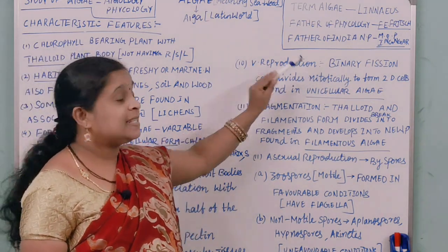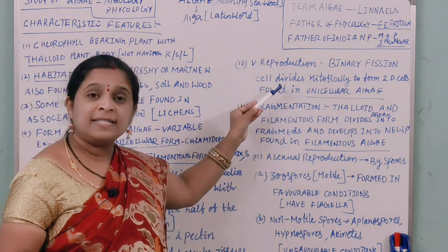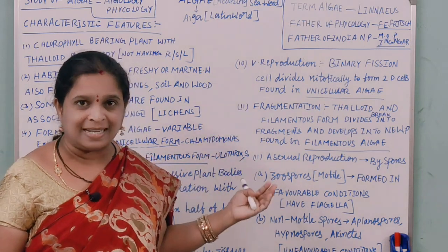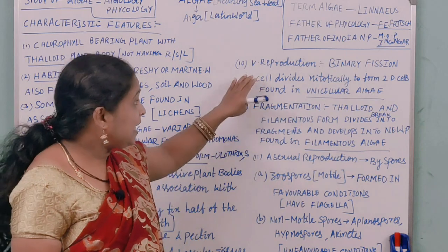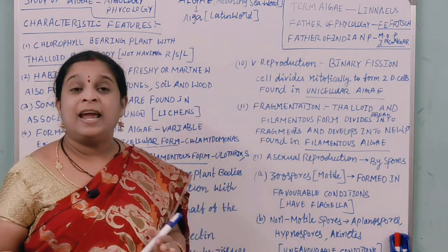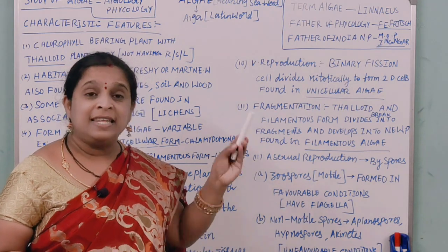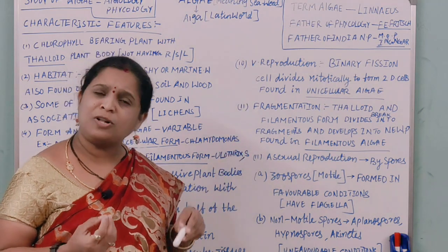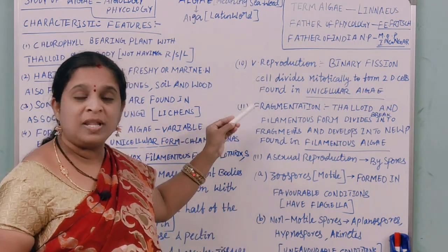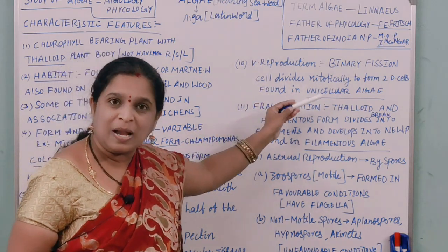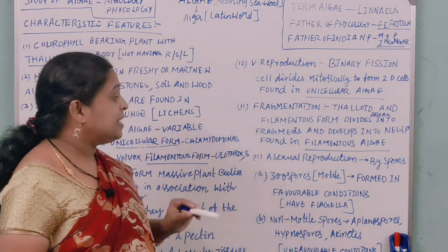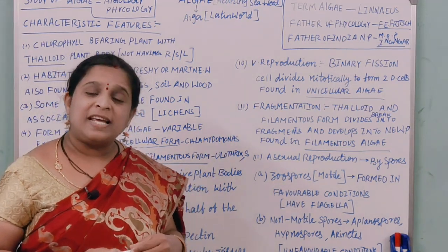Now let us look at reproduction in algae, starting with vegetative reproduction. The first method is binary fission, where a cell divides mitotically into two daughter cells, each behaving as a new cell. Binary fission is found in unicellular algae. The second method is fragmentation — the thalloid or filamentous structures break into small fragments, each growing into a new organism. Fragmentation occurs in filamentous algae.